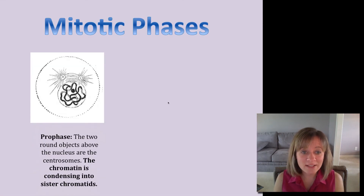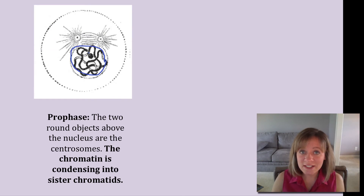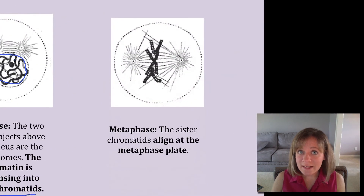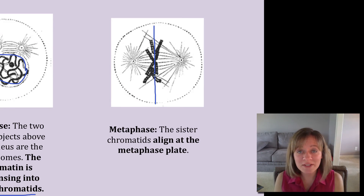Now the mitotic phases. First is prophase: we have our nucleus and chromatin starting to condense into sister chromatids — that's really the main thing happening in prophase. Also, the nuclear envelope is starting to break apart. Second is metaphase: the sister chromatids are lining up at the metaphase plate, preparing to separate from one another. Remember, each arm is identical to the opposite arm because they are simply a duplicated chromosome.